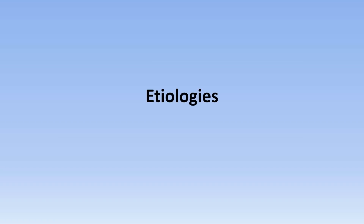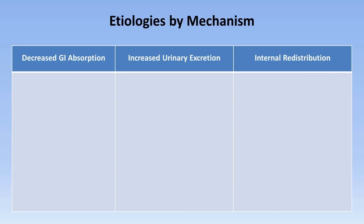Let's now talk about the etiologies of hypophosphatemia. The first general category is decreased GI absorption. This can be seen in low intake of dietary phosphate. This is generally not seen in starvation due to the lack of insulin and an increase in cell catabolism that results in phosphate release from cells. It is seen, however, in malnourished alcoholics.